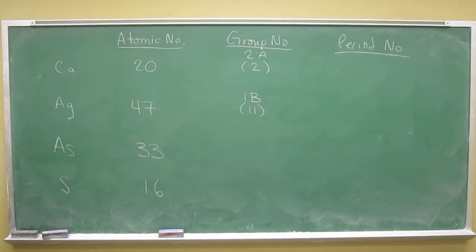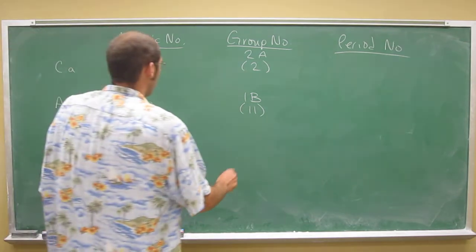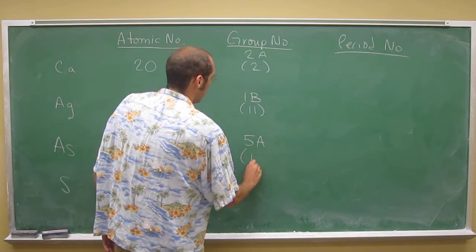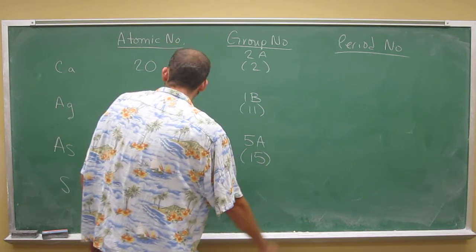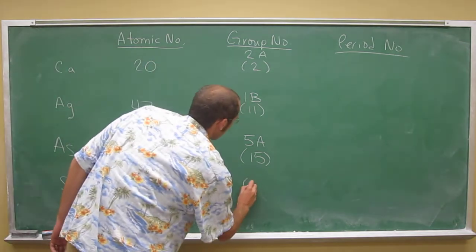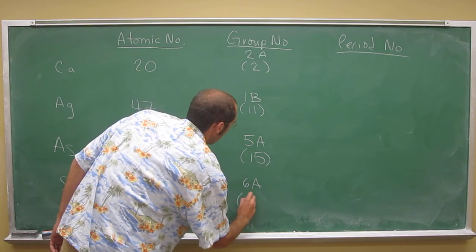And then arsenic, I guess you guys don't know about transition metals and main group and stuff yet, but arsenic's over a few more, and you can see its group number is 5A or 15. And then sulfur is one over from that, which is 6A or 16.